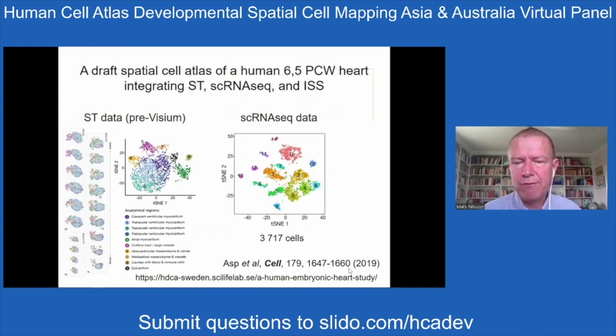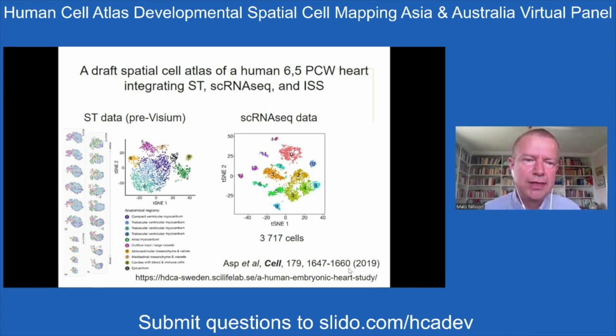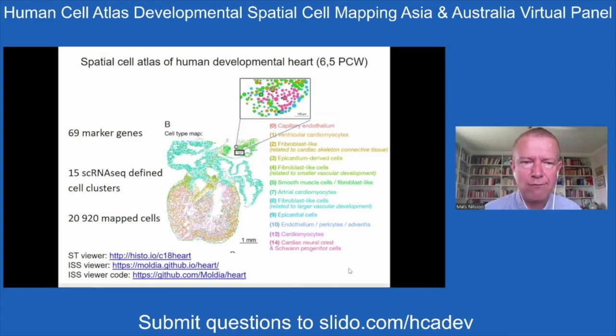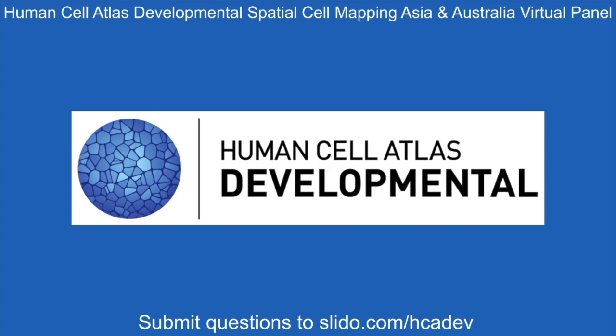We place every cell in the tissue and give it a probability of belonging to a certain cell type. We developed and validated this in mouse brain. We applied it in human developmental heart tissue, generating spatial cell maps using this probabilistic approach across ages of human heart development — taking spatial transcriptomic Visium data together with single-cell RNA sequencing markers to create a spatial cell atlas. That was my presentation in short format.